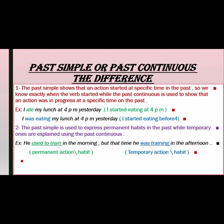Second difference: the past simple is used to express permanent habits in the past, while the past continuous expresses temporary habits. For example, 'He used to train in the morning' — used to plus the base form expresses permanent past habit; but 'He was training in the afternoon' — was plus verb+ing — expresses a temporary habit. So past simple for permanent habits, past continuous for temporary ones.